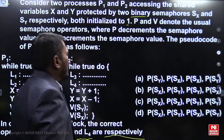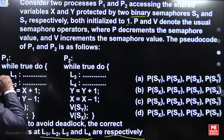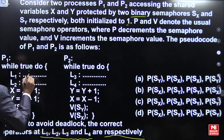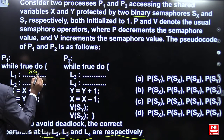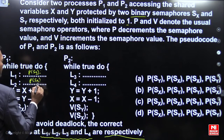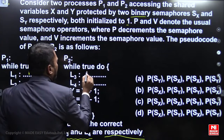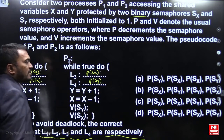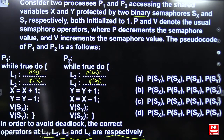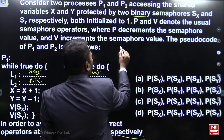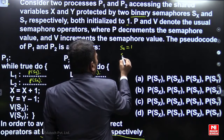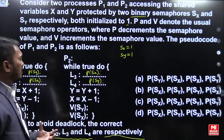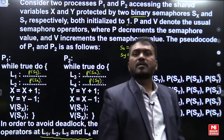Now let us substitute the options and observe one by one. If we substitute option A, the initial values are SX = 1 and SY = 1. What is the problem with option A? We need to consider one important point with respect to semaphores: preemption may occur at any point of time after completion of the current instruction.